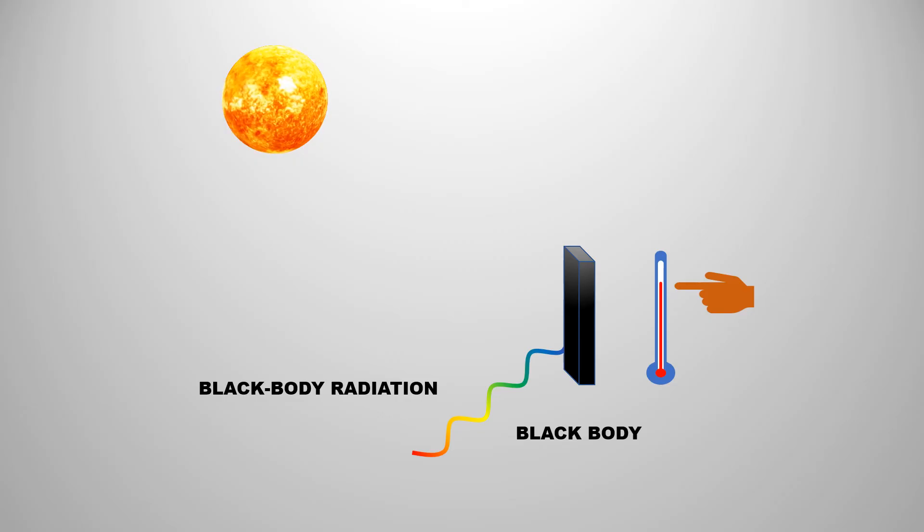Our sun is a perfect black body because it emits radiation of all types of wavelengths. Scientists made a black body in the lab that could absorb up to 99.9% of the radiation.